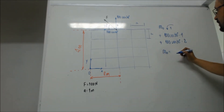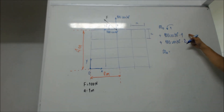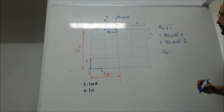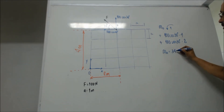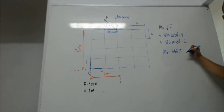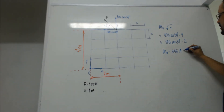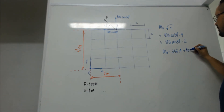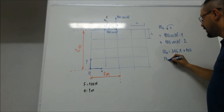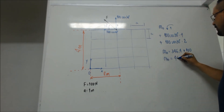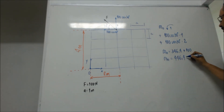So, the moment of O is: 100 times cos30° times 4 equals 346.4, plus 100 times sin30° times 2 equals 100. Positive. So, the moment in relation to O: 446.4 Newton-meter.